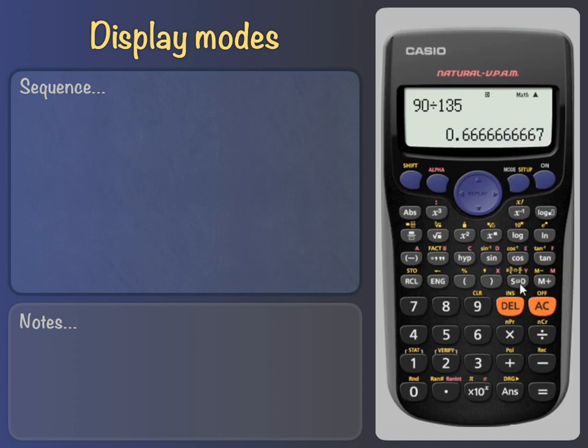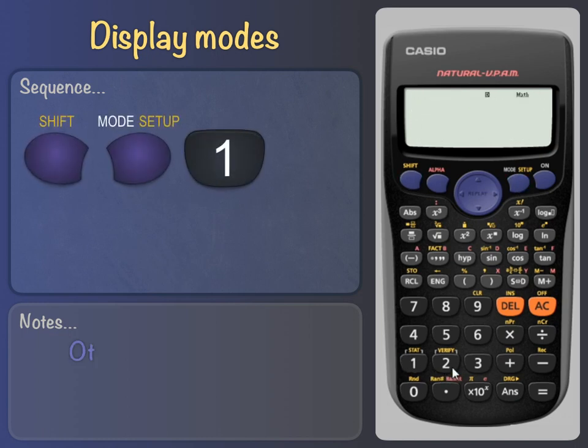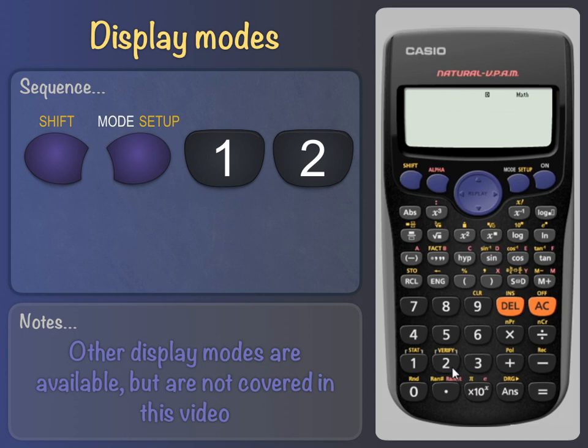If you'd like this form of the answer displayed first, then try this. Press Shift Setup 1, then 2 to select Linear Output. When we input our calculation again, we get the non-recurring decimal shown first. We can still view the answer in its other forms by pressing the SD button. To get back to the previous display settings, press Shift Setup 1, then 1 again.